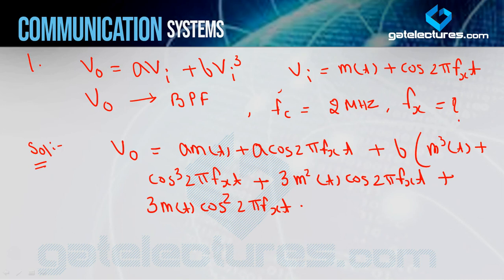Now, V0 is passed through a band pass filter such that the output is a DSBSC signal. DSBSC signal format is m(t)·cos(2π·fc·t) — message multiplied by carrier. Among all the terms in the expansion, we look for the term of the form m(t)·cos. The first term has only m(t) — rejected. The second term has only cos — rejected. The third term is m³(t) — rejected. The fourth term is cos³ — rejected. The fifth is m²(t) — rejected.